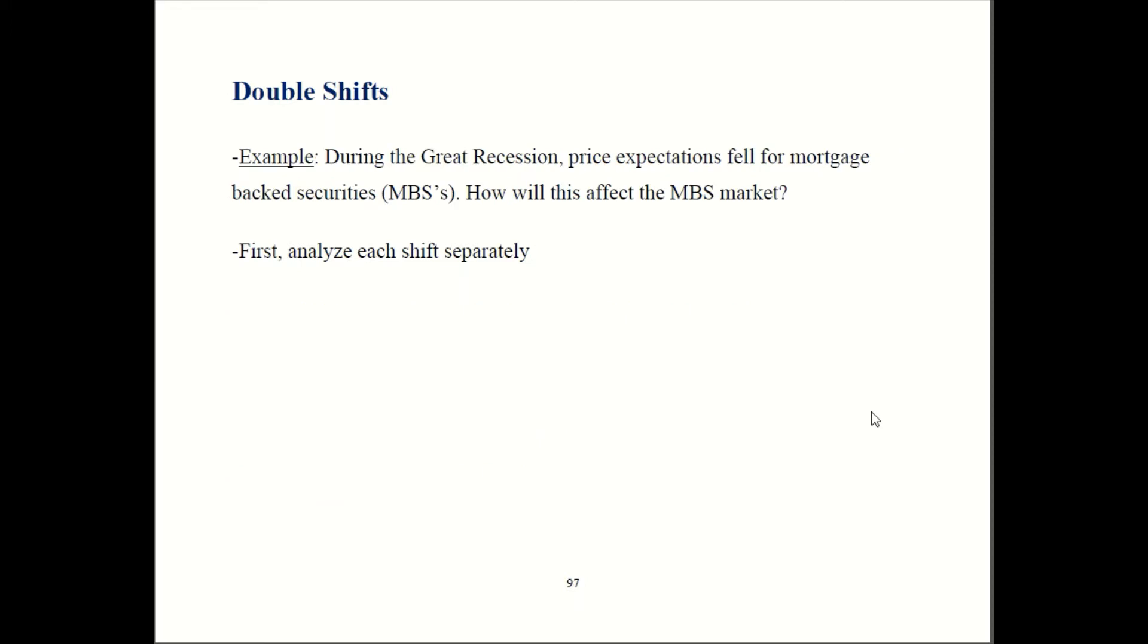So back in the Great Recession, the expected price of a mortgage-backed security was falling. So a lot of people are defaulting on their mortgages. So an asset that's backed by a mortgage becomes less valuable if the borrower is not paying it back. So the expected value of these things was decreasing.